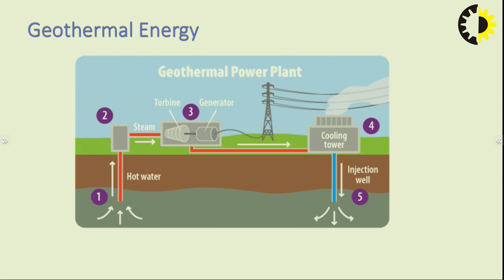First we will look at the geothermal power plant. A geothermal power plant is one in which energy is extracted from the earth's crust. Hot water is extracted from these layers, steam is generated from that hot water, and the steam is imparted on the blades of a turbine. With the rotation of this turbine, electricity is generated and supplied.